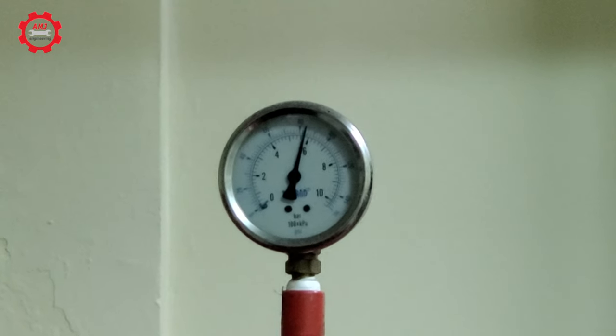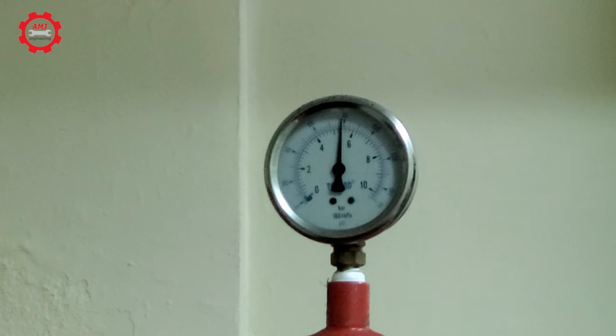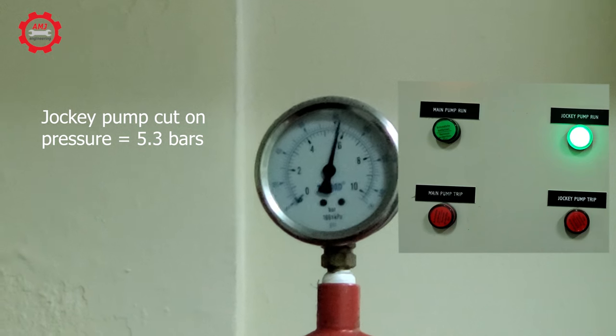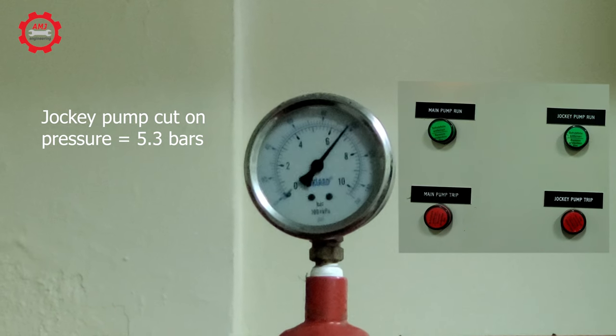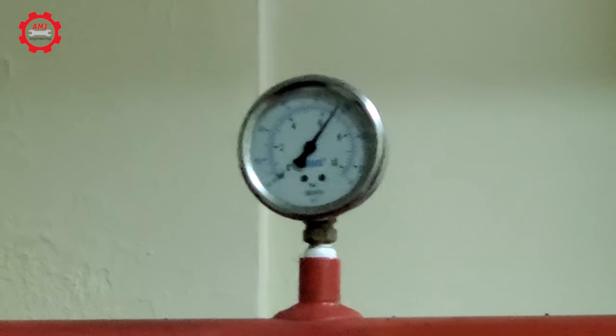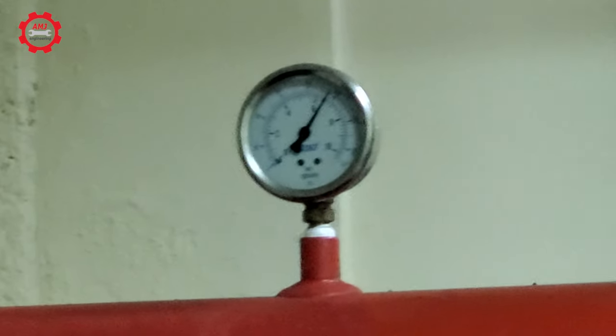As you can see the pressure is decreasing. Once it reaches the preset cut on pressure, 78 psi or 5.3 bars in our case, the jockey pump will start automatically. Jockey pump stopped automatically as you see when it reached the cut off pressure.